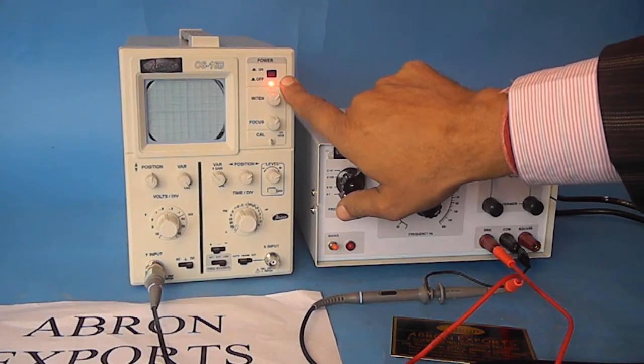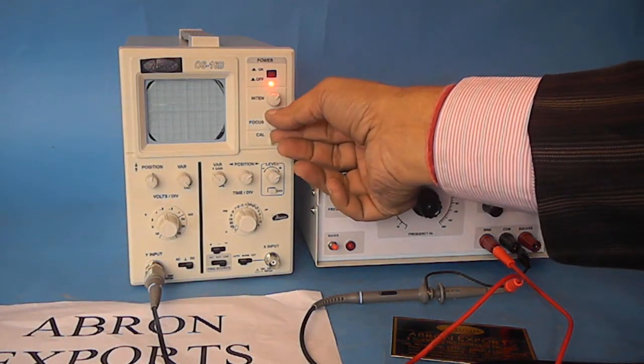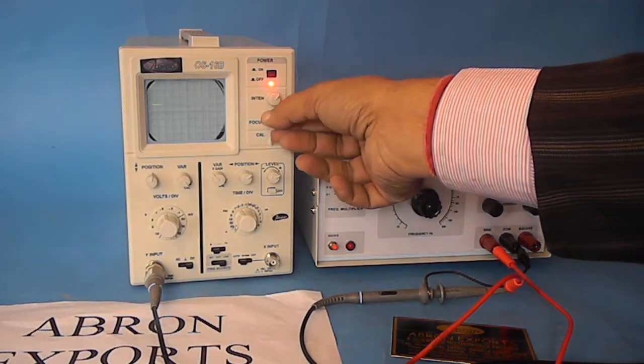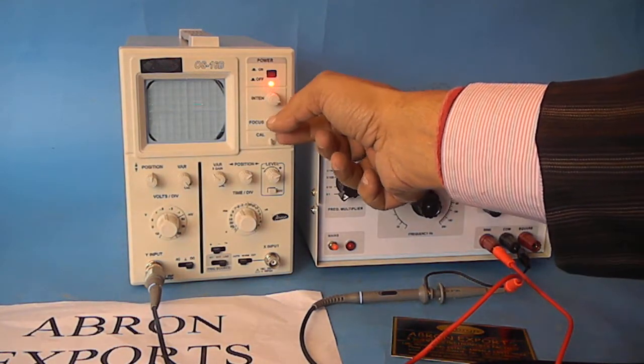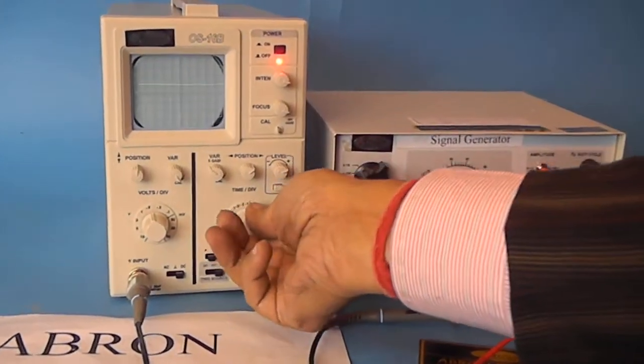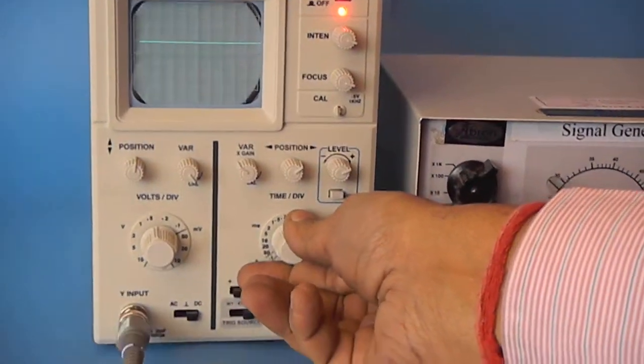You will see the indicator and then you will see the line. First, you have to bring the line. This you can do with the intensity control, increase the intensity. The line may not be straight, if it is coming like this, you can make it a straight line.